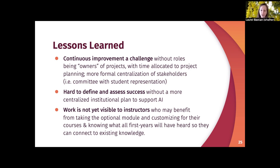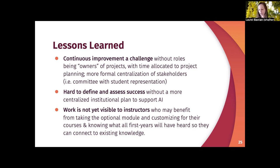As we look at student responses and think about how we might revise, we've also been thinking about the lessons from the process. One key lesson is that continuous improvement is a challenge when it isn't attached to a particular role — we don't yet have a specific owner of this process. Having a role where that work is part of their total time, or a more formal centralization of stakeholders, would be supportive. We also keep coming back to the difficulty of defining and assessing whether the module is successful without a more centralized institutional plan to support academic integrity. The work is not yet as visible to instructors as we had hoped, and we aim to take steps this next year to make it more visible and useful within individual courses.